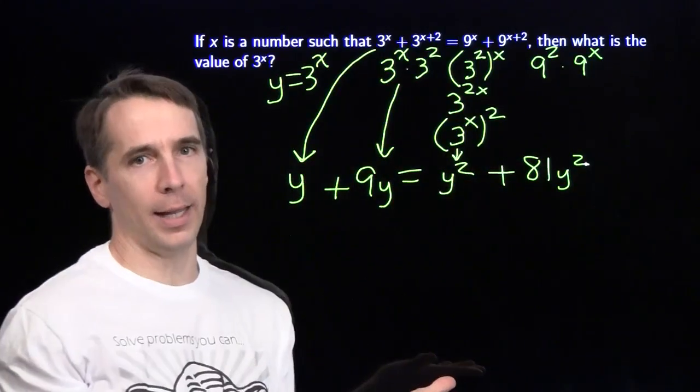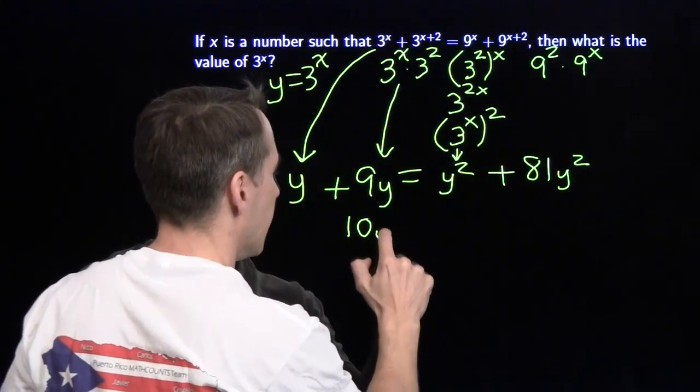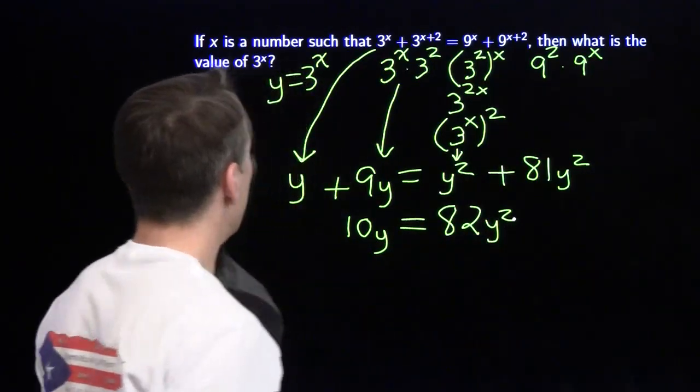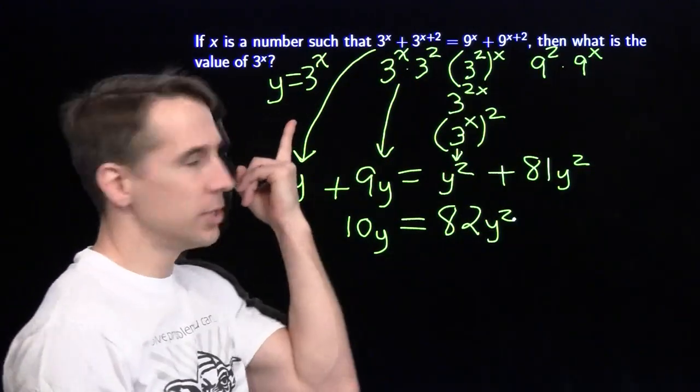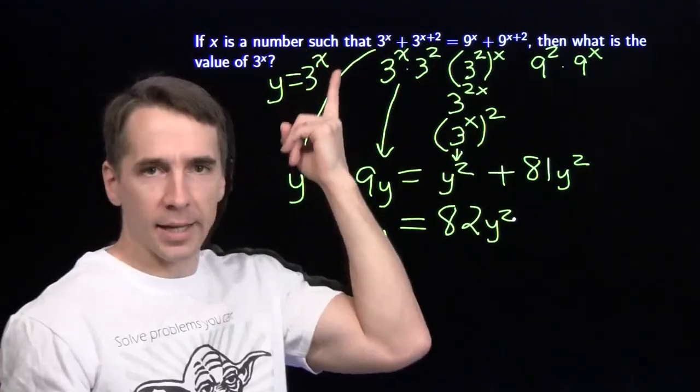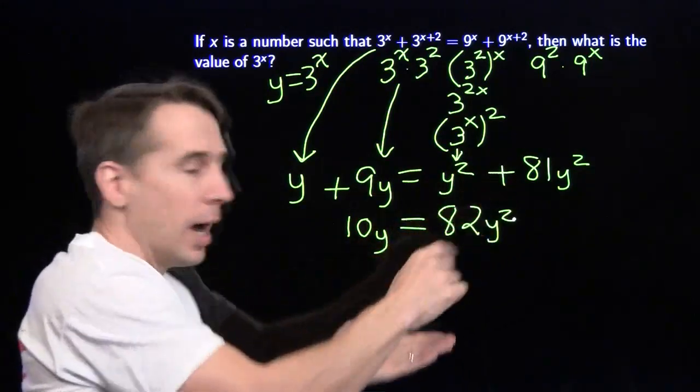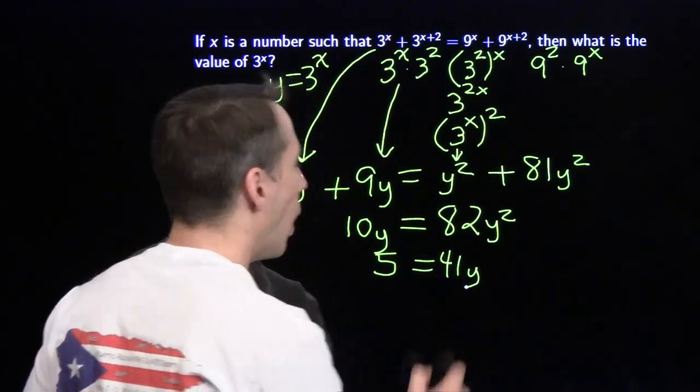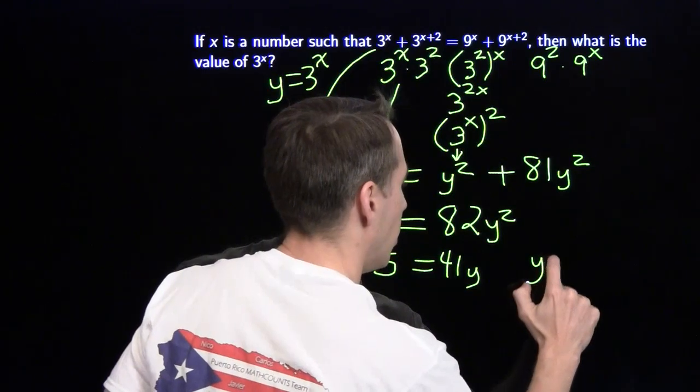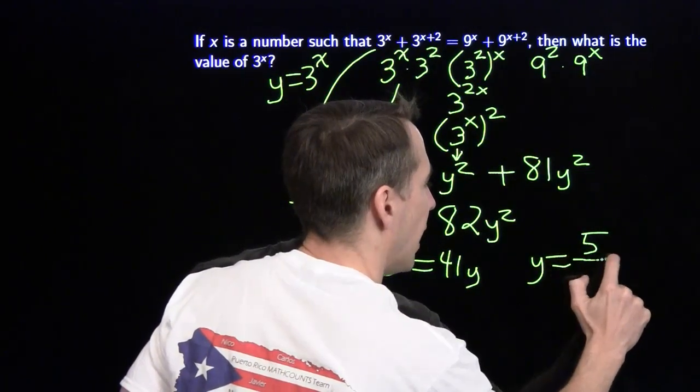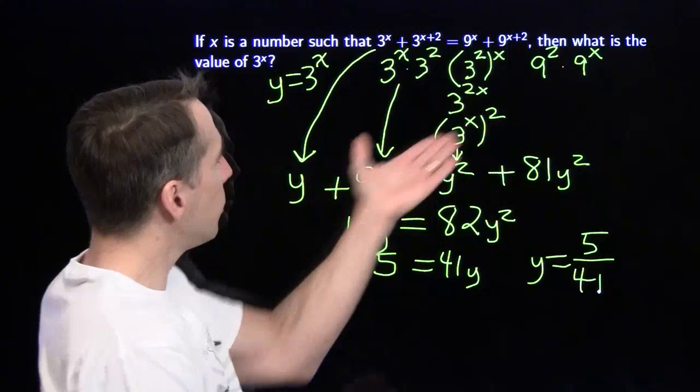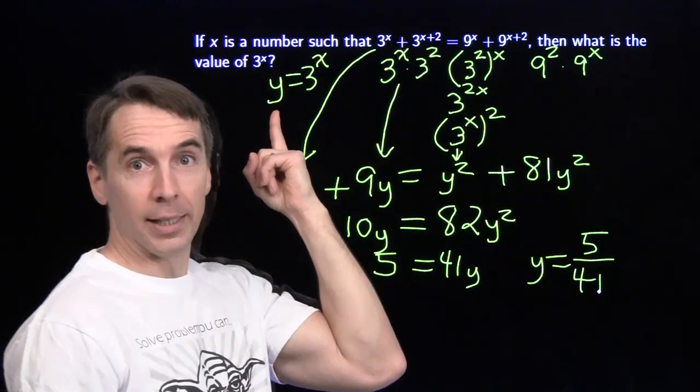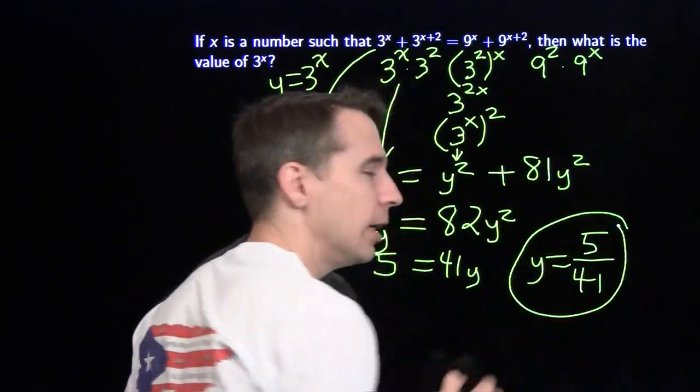And this is an equation we know how to handle. We combine these two, we get 10y. Combine these two, we get 82y². And now we know that y can't ever be 0. There's nothing we can stick up there that's going to make 3 to the x become 0. So y isn't 0. So we can divide by y. We can also divide by 2. And we'll get 5 equals 41y. Divide by 41 and we get y equals 5 over 41. And once again, we go back, we read what we're looking for. We want the value of 3 to the x. We found y. But y is 3 to the x. So no fear. We are done.